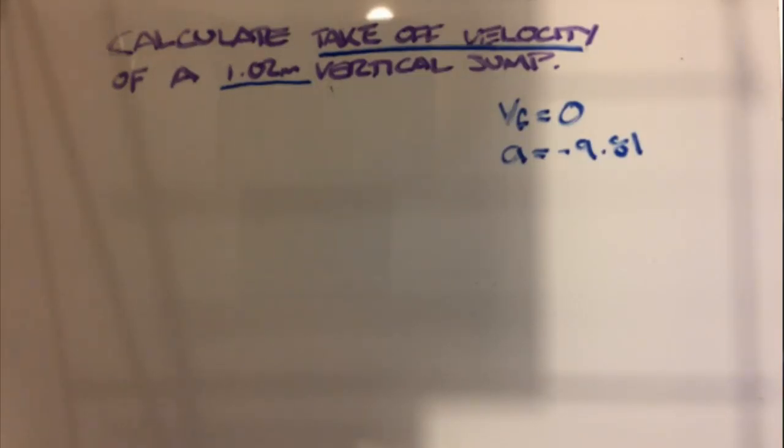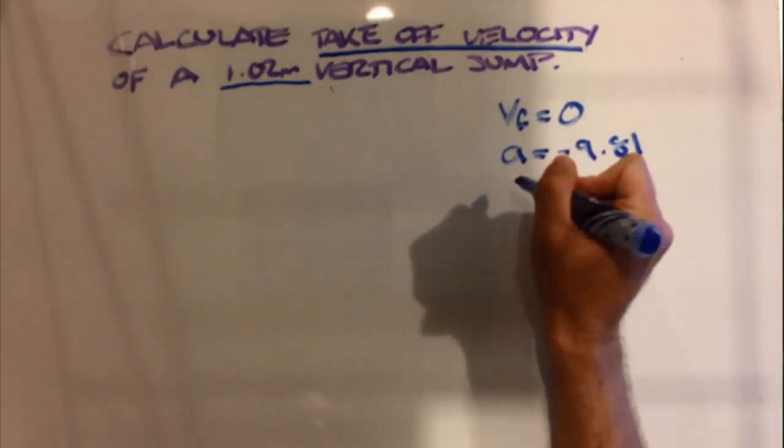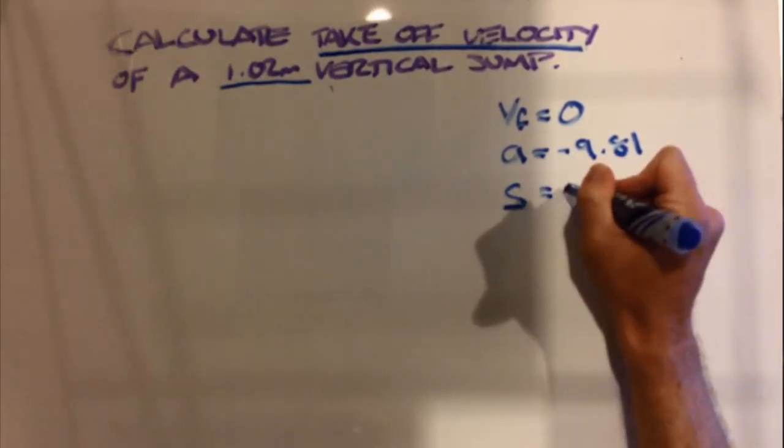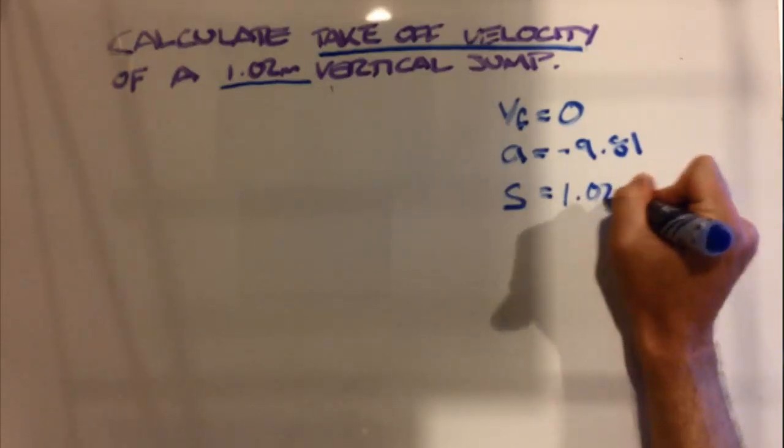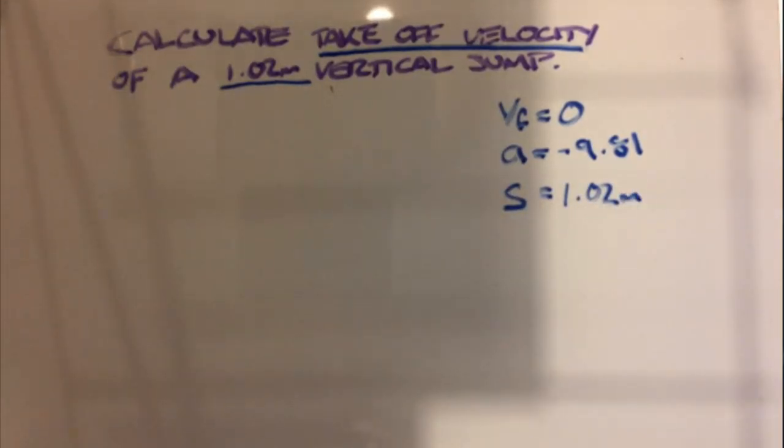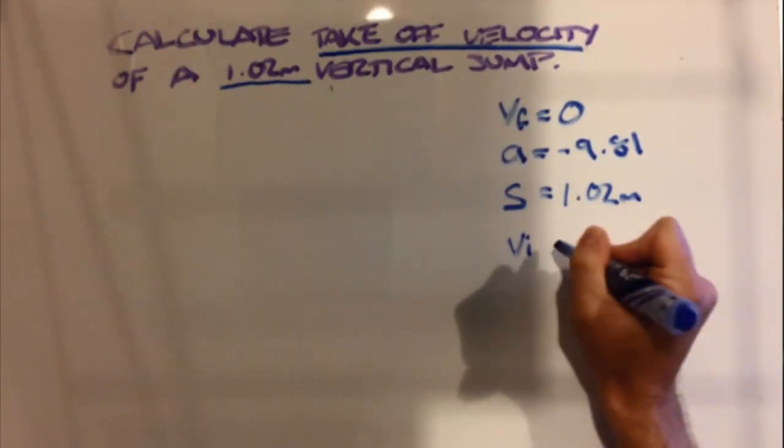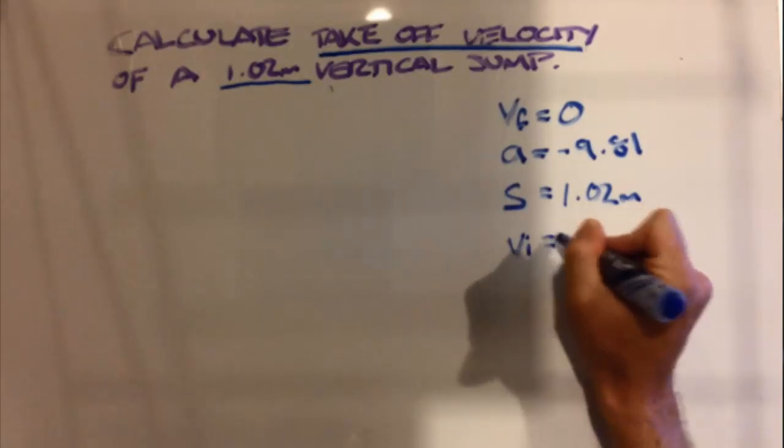Then we can see that we also have a displacement, and in this case it is 1.02 meters. We are looking for our takeoff or initial velocity.